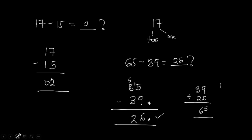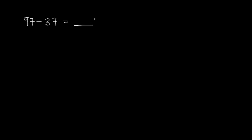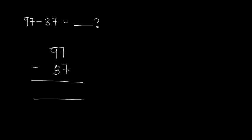Let's have a look at more examples: we have 97 minus 37. If we do the subtraction, we subtract the ones first — 7 minus 7 gives us 0, because if you have 7 apples and give 7 apples out you're left with none. Now we have 9 minus 3: if you have 9 apples and give 3 out, you're left with 6. So 97 minus 37 gives us 60.